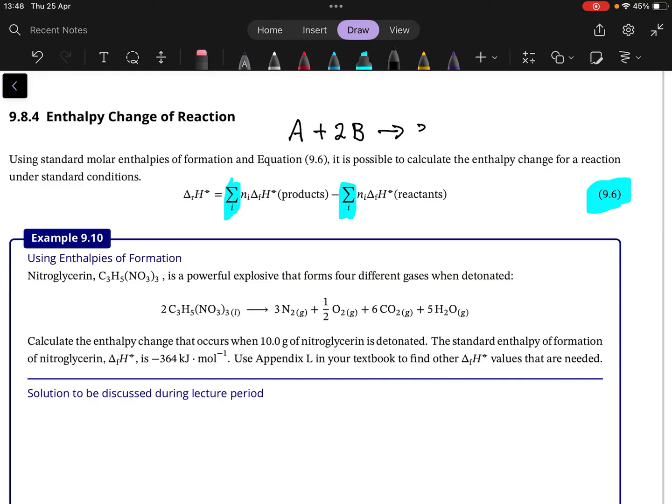The general way: let's say for example we had A plus 2B giving us 3C. Then the enthalpy of reaction for this would be equal to—so it says products, and then we have an nif. All that means is ni—so that is the stoich.